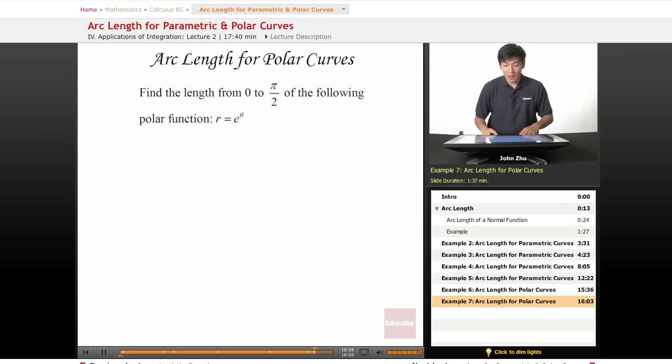Looking for the length from 0 to pi over 2 of polar function r equals e to the theta. So let's go ahead and plug that in to our formula.